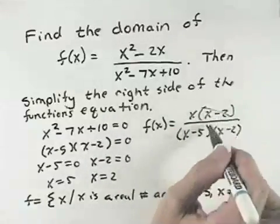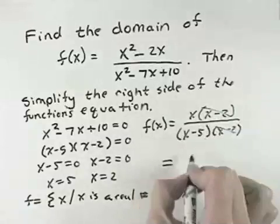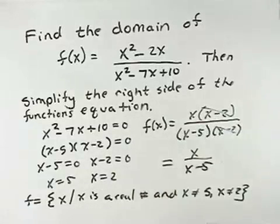So we can see a common factor of x minus 2, so that our function simplifies to x over x minus 5.